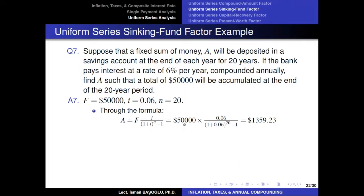You have actually invested a total of approximately $27,000 — if you multiply the annual installment size by 20 directly, you get a number close to $27,000. However, under the compounding interest rate, this uniform series of payments accumulates to $50,000.